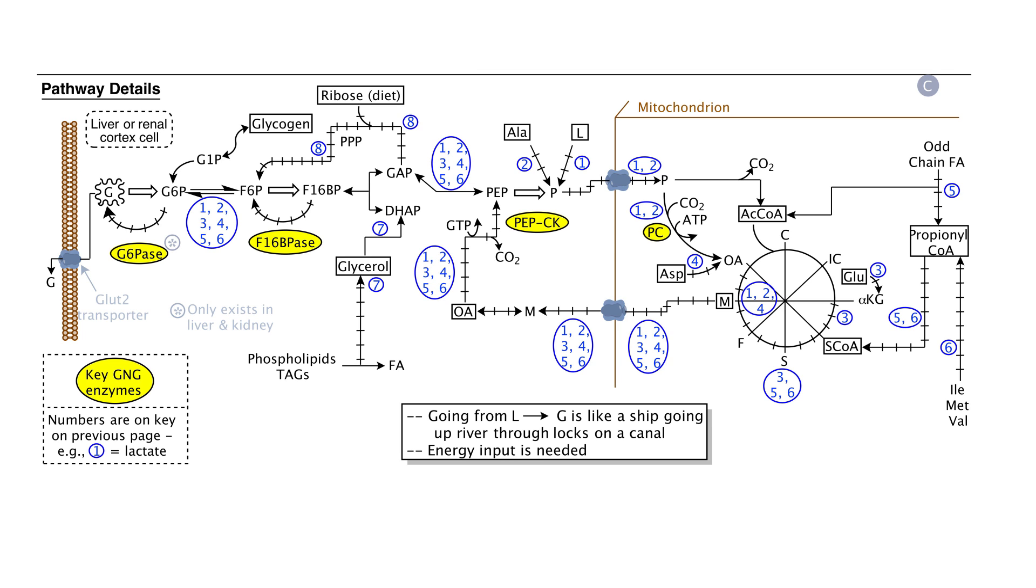Precursor 4 is aspartic acid. Aspartic acid is the amino acid equivalent of oxaloacetate. Aspartate is deaminated into oxaloacetate, which enters the gluconeogenic pathway at about 10 o'clock on the TCA cycle. At this point, the oxaloacetate formed from aspartate joins the oxaloacetate made from alanine and lactate, precursors 1 and 2, and continues all the way back to glucose.